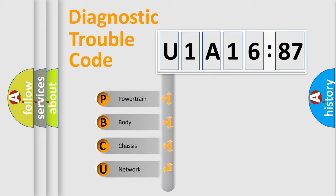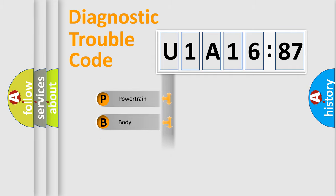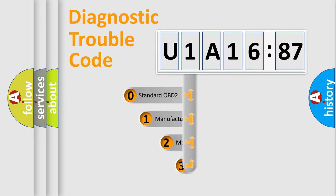We divide the electric system of automobile into four basic units: Powertrain, Body, Chassis, Network. This distribution is defined in the first character code.